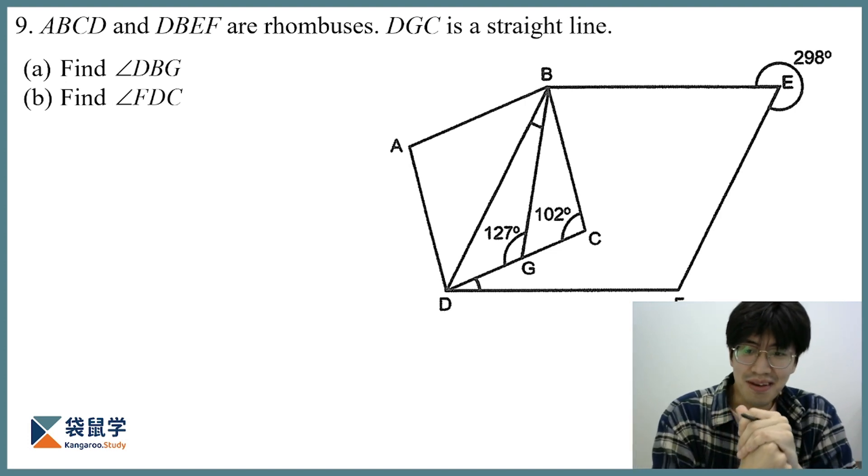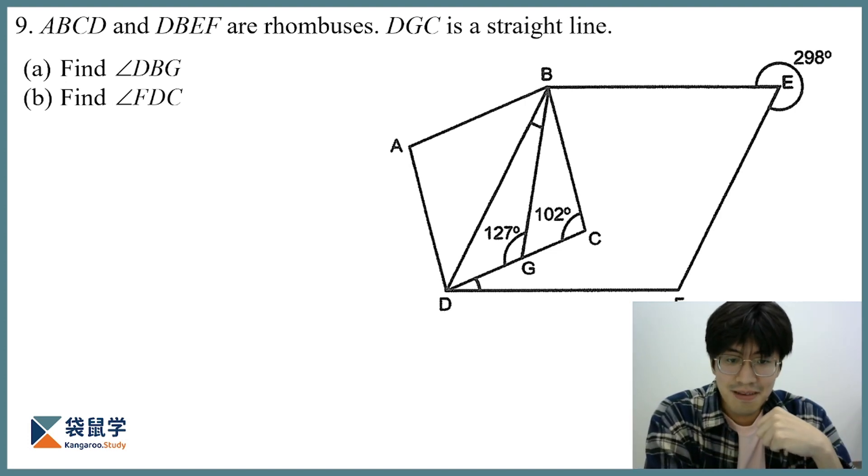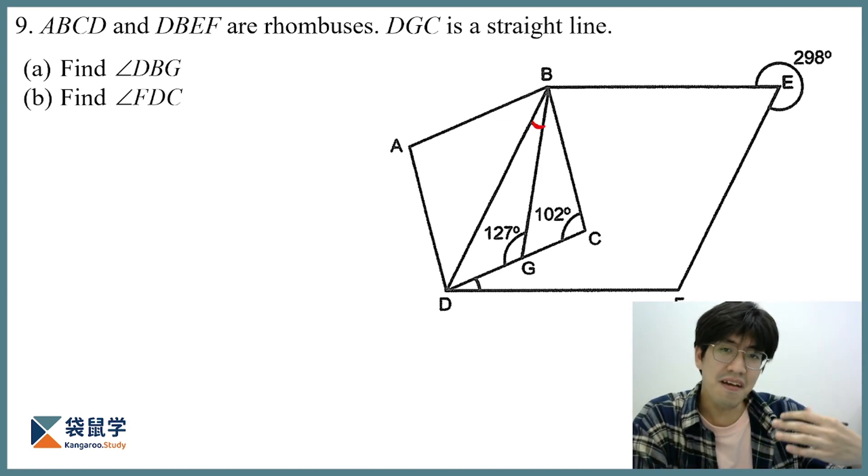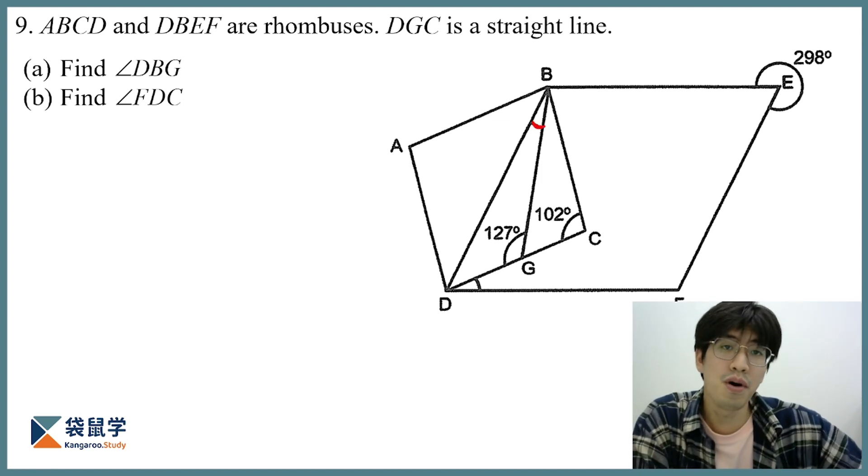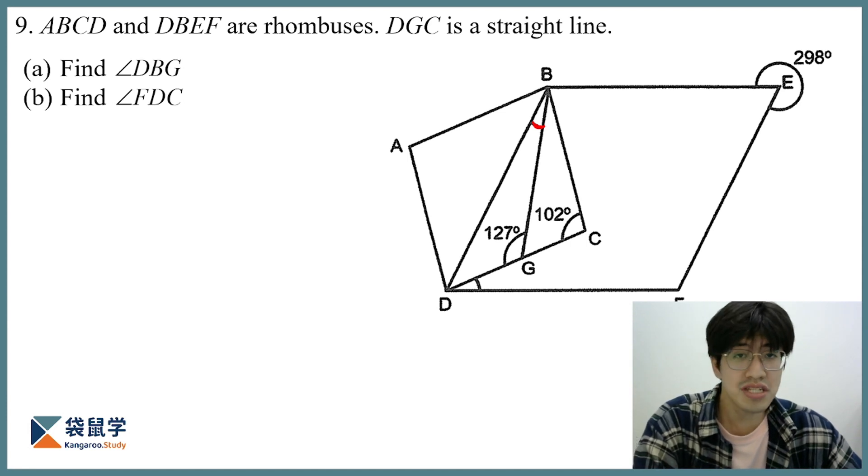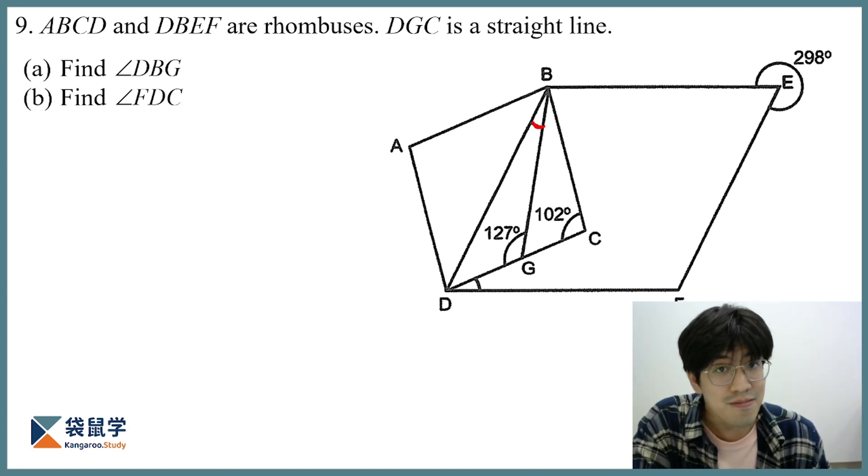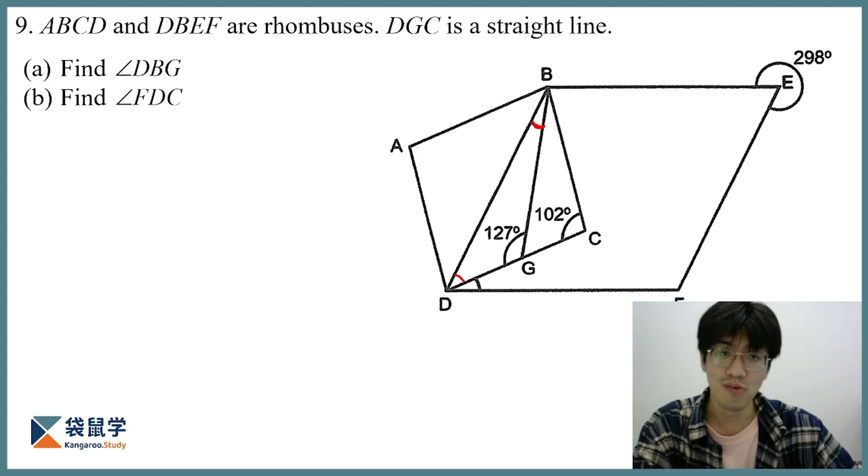So let's see, starting with the first part, DBG. This is the angle DBG, but can I find it in a straightforward manner? No, because even though it is in the triangle BDG, I have one angle missing. So this angle over here. So what can I do?